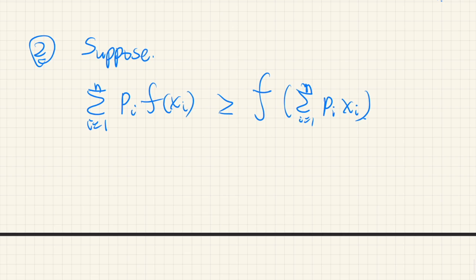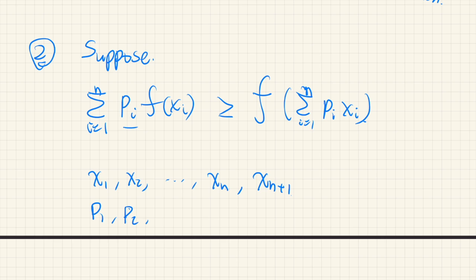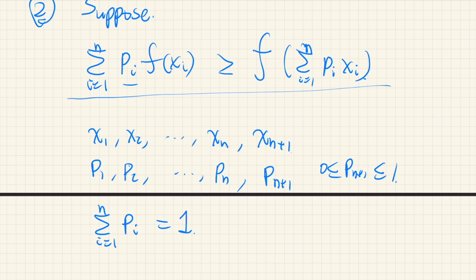Then we want to add one more point. So we already have x1, x2, up to x_n with weights p1, p2, up to p_n. We add one more point x_{n+1} with weight p_{n+1} between 0 and 1. By assumption, the sum of p_i from i=1 to n equals 1, so adding up to n+1 gives a sum greater than 1 in general — it's not normalized.